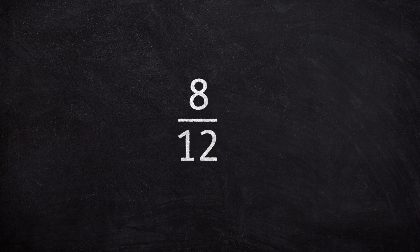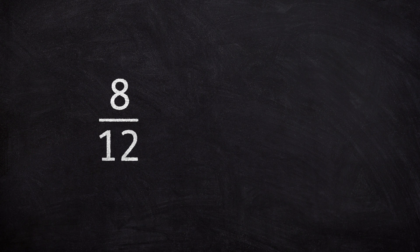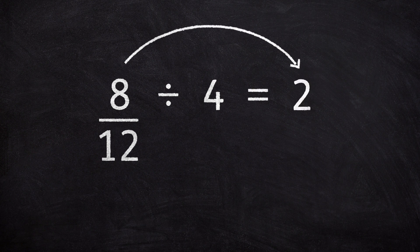So let's take 8 and 12. The largest number that goes equally into both is 4. So 8 divided by 4 is 2, and 12 divided by 4 equals 3.